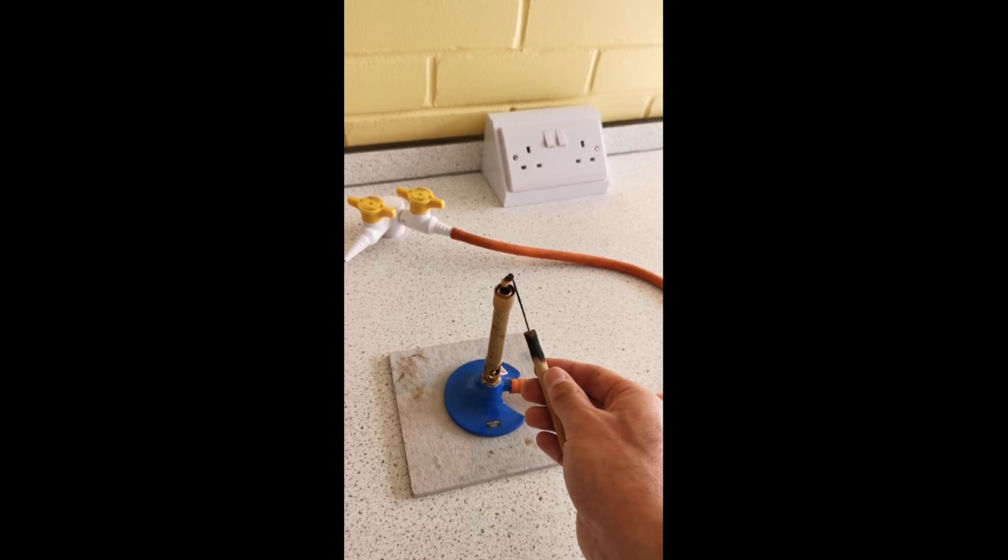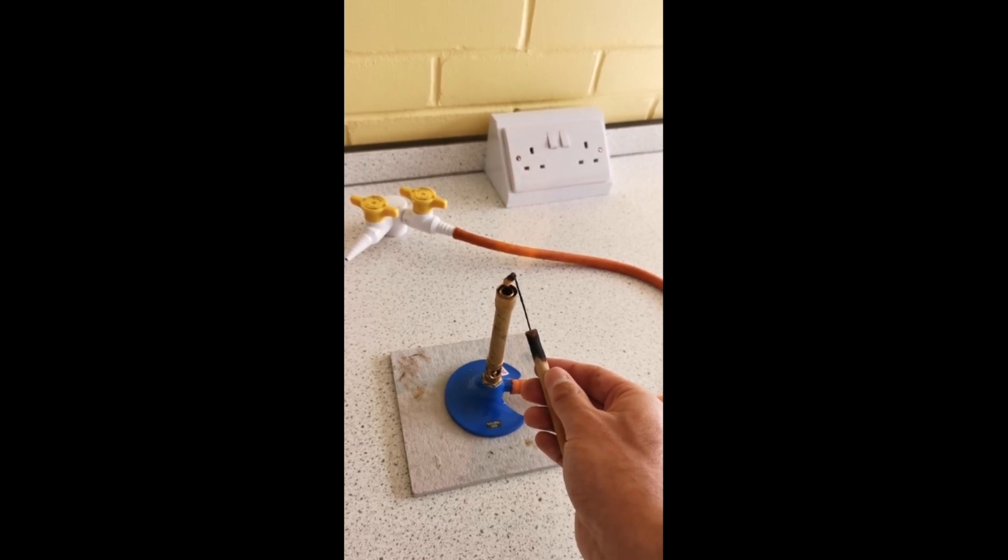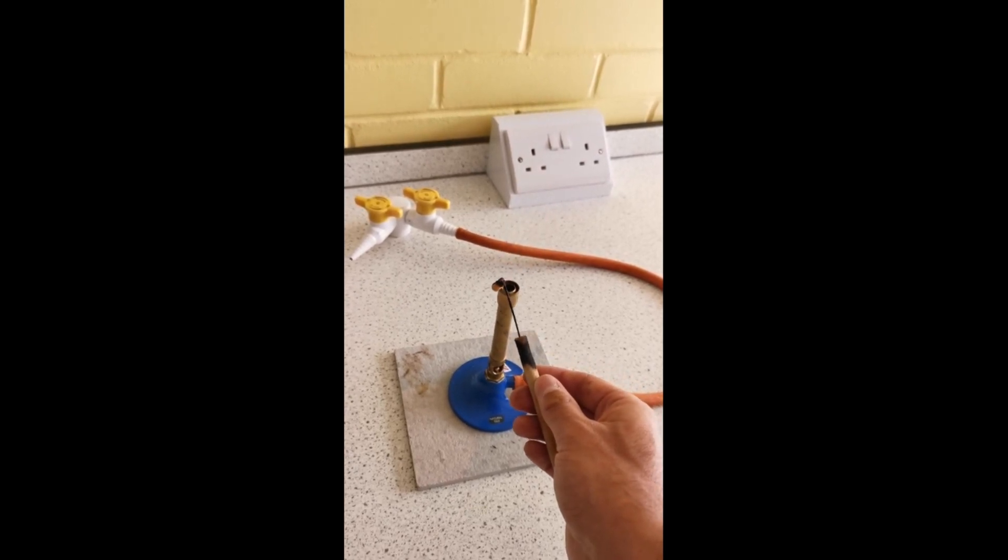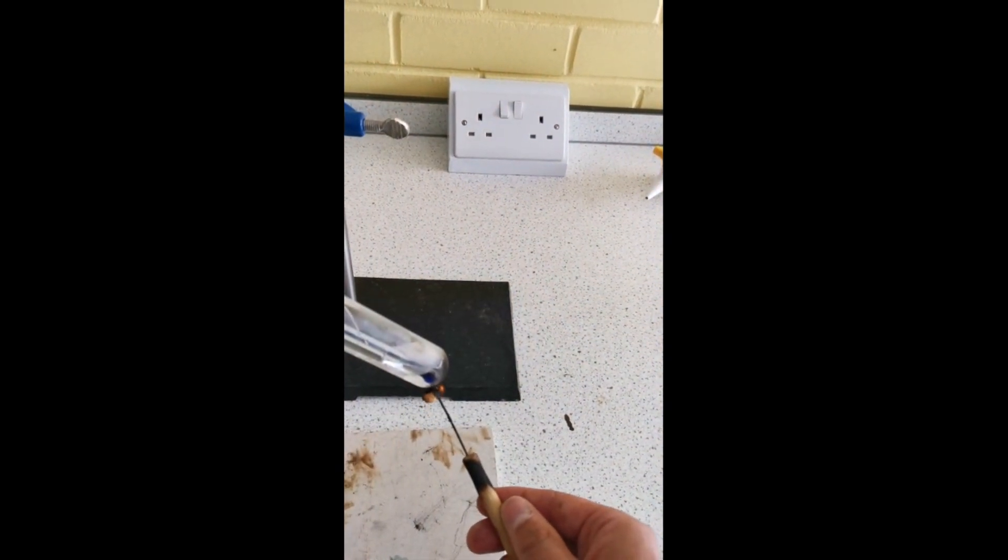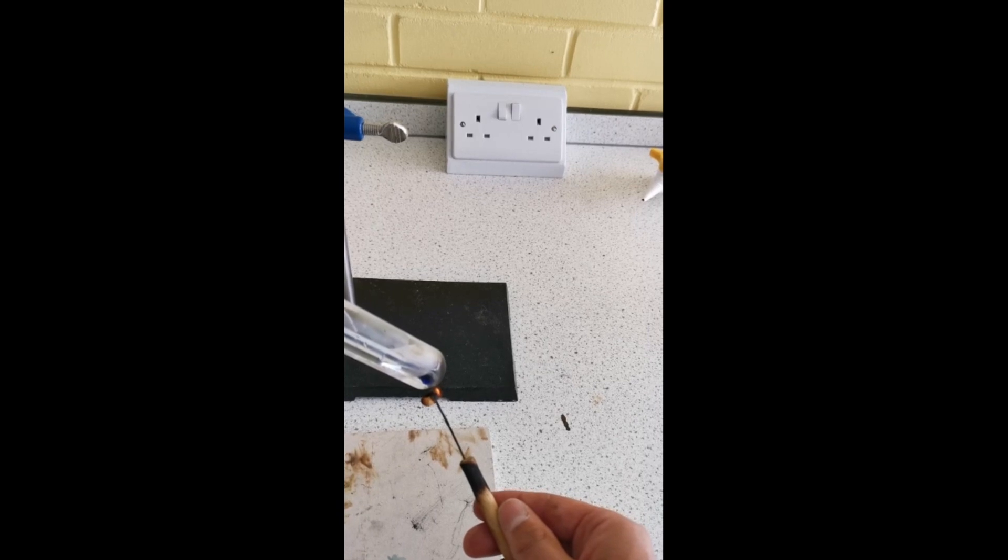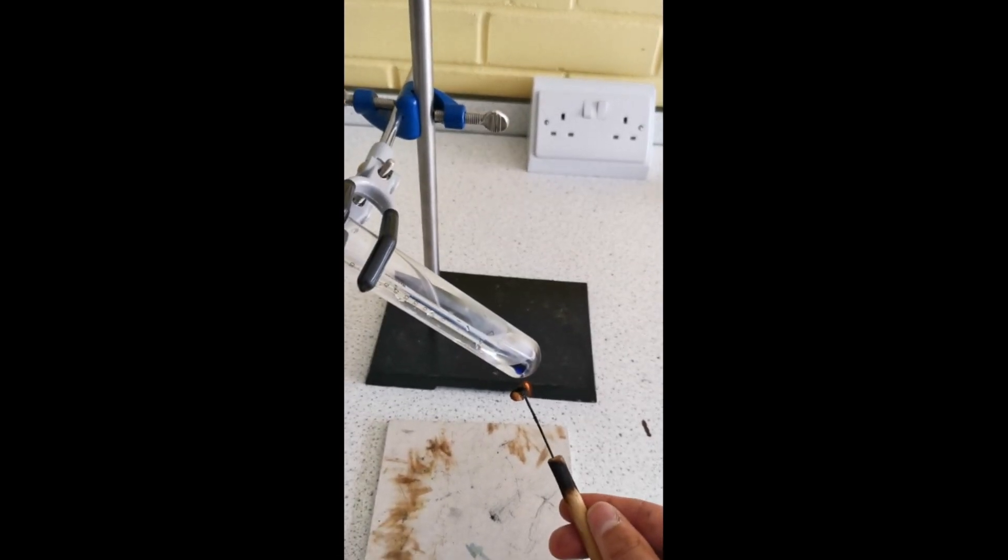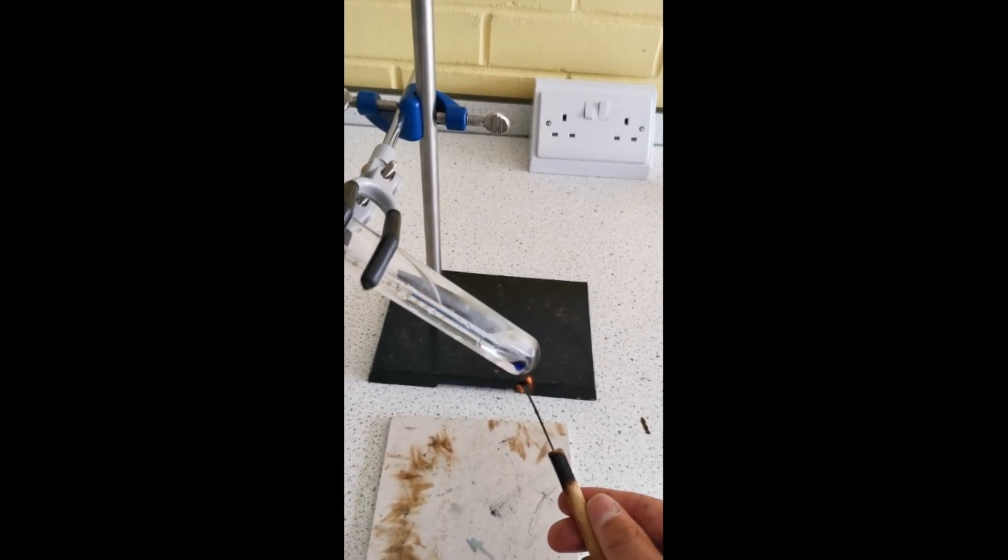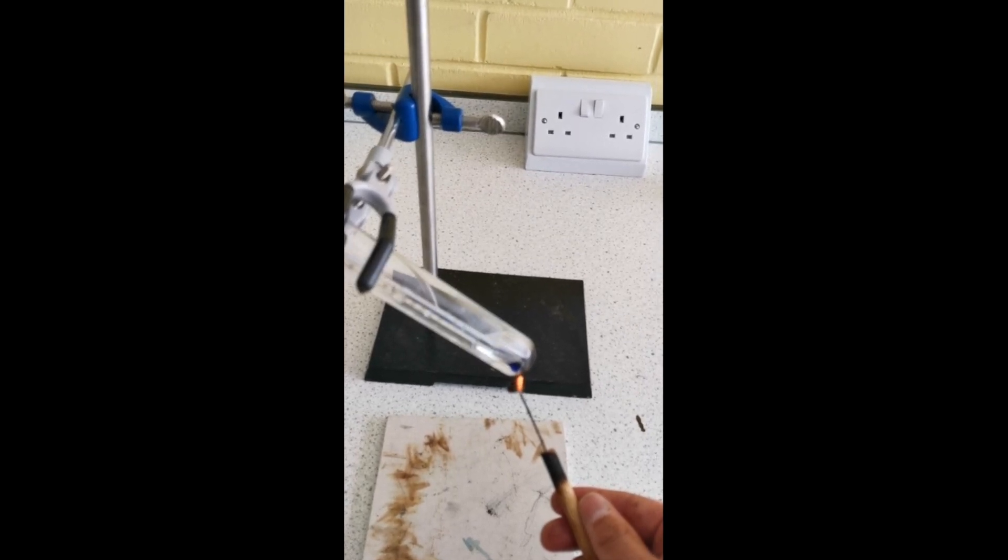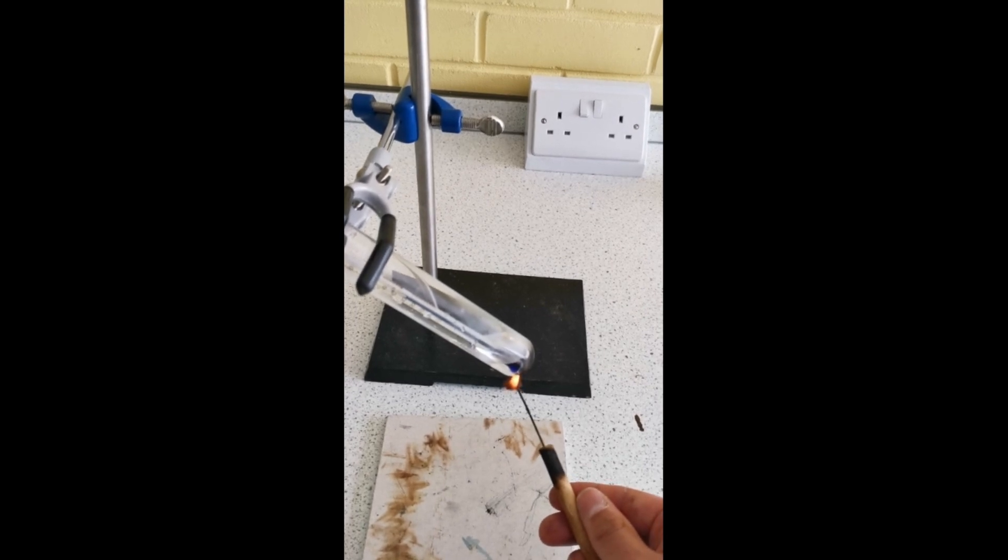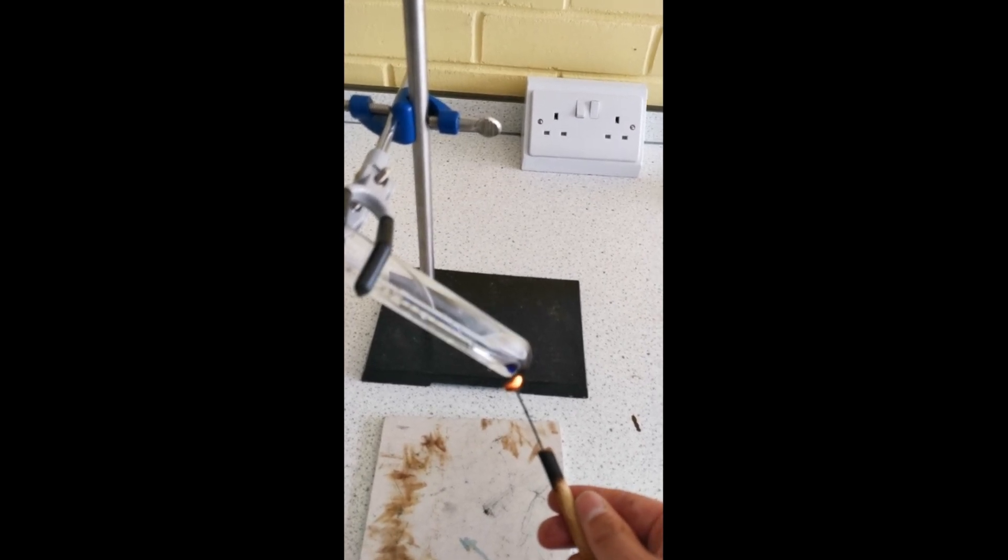Wait for it to light. Then hold that flame back underneath the boiling tube, and you want to do this until all of the food is burned. You want to release all of that energy from the food and use it to heat the water in the boiling tube.